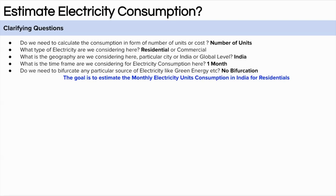First, let's start with the clarifying questions. The first question we can ask is whether we need to give the answer in terms of number of units consumed or cost of the electricity consumed. This will determine the final form of our answer. Let's assume we are thinking about number of units of electricity consumed.